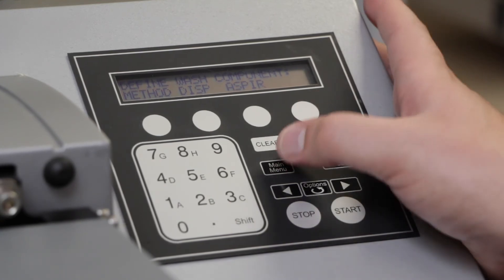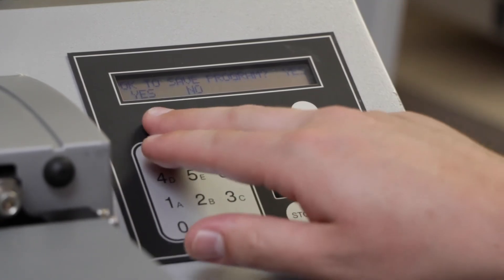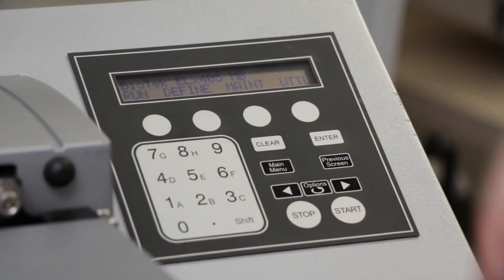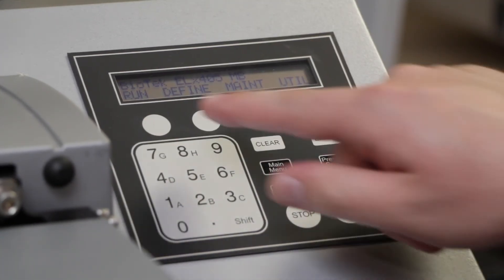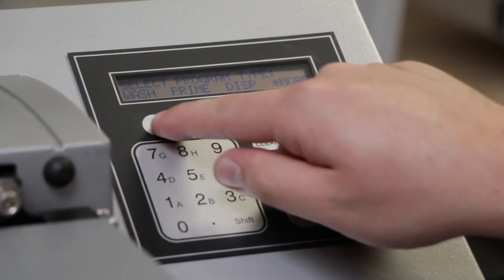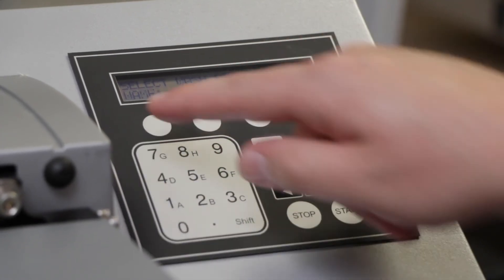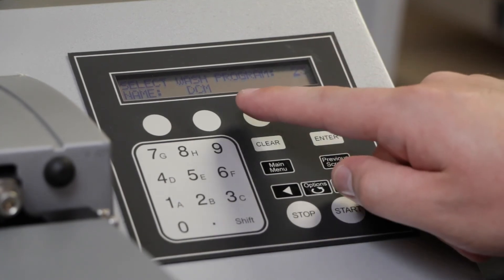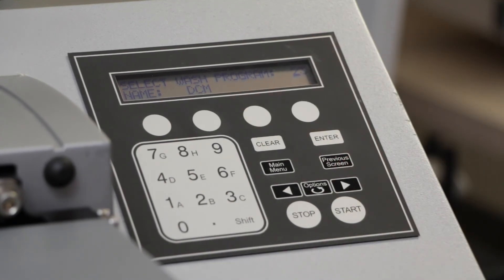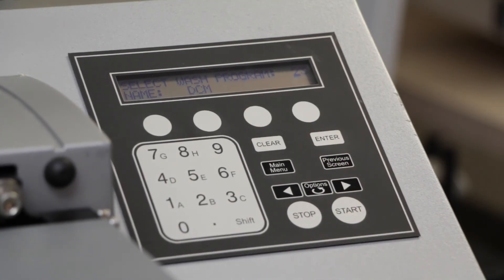Once you're finished, press the main menu button and press yes to save your protocol. To run your newly created protocol, select the run option. The wash, in our case, is the protocol type that we just created. And scroll through to find the name of the protocol. Once you hit start and answer a few quick prompt questions, you're ready to run.